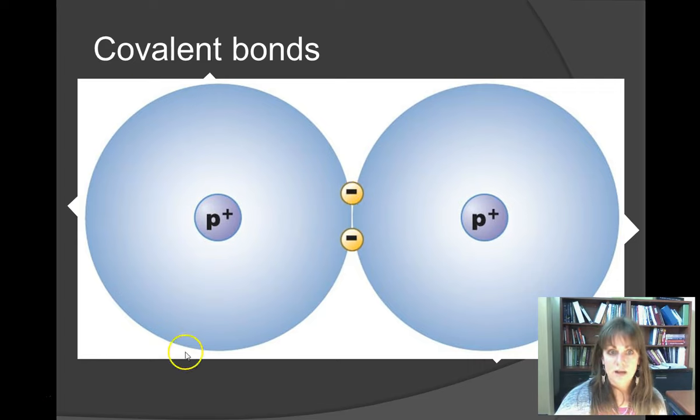They kind of merge the shells, so now there's two electrons in that first valence shell around each of these atoms. And here we have a molecule from sharing electrons.